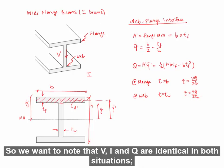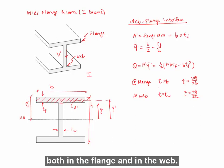So we want to note that V, I, and Q are identical in both situations, both in the flange and in the web.